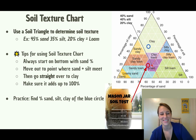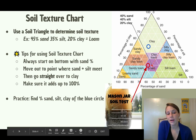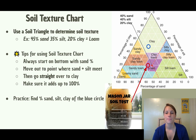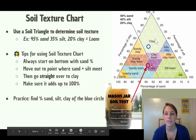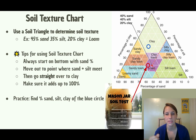Now let's practice. You can see a blue circle on the soil triangle. I want you to find the percentage of sand, silt, and clay for that blue circle. Pause the video and figure out those percentages before I give you the answer.